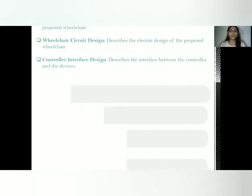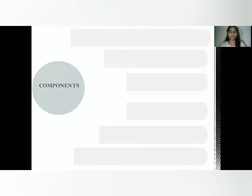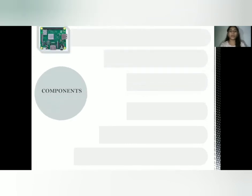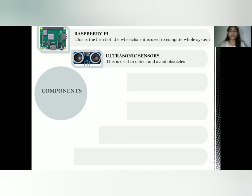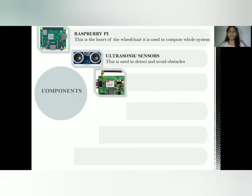Now let us see the hardware and software components used. The first component is the Raspberry Pi, which is the heart of the project — the central processing unit that controls all operations. Next is the ultrasonic sensor, mainly used to avoid obstacles; whenever an obstacle is detected, the wheelchair automatically stops. Next is the GSM module; when the wheelchair is stopped, the information is sent to family members through an SMS.